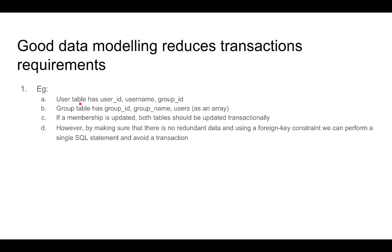Modeling our data well and ensuring that the users array is not used — and instead using only a group ID here with a foreign key constraint to the group table — will ensure that we don't actually need to use a transaction and we can get away with a single SQL statement.